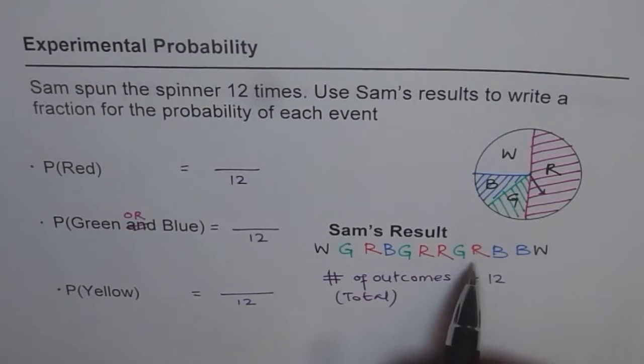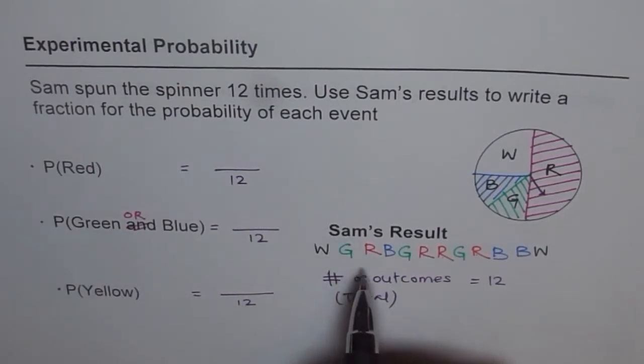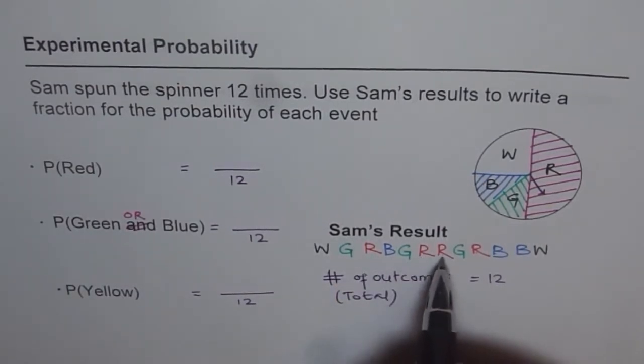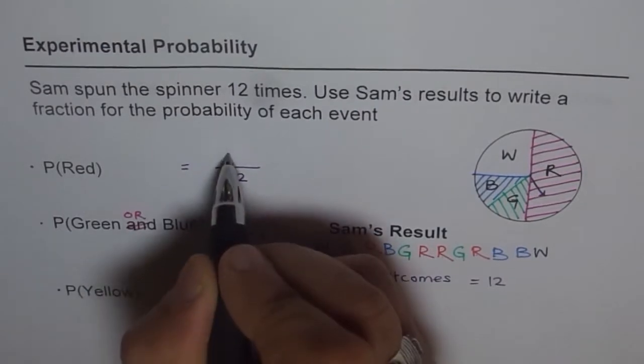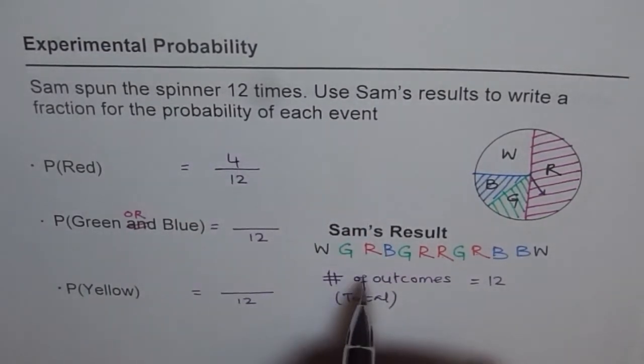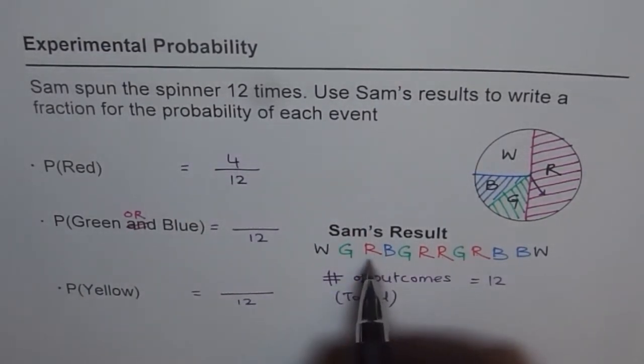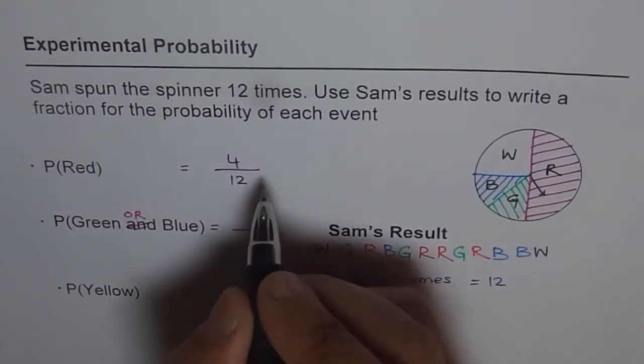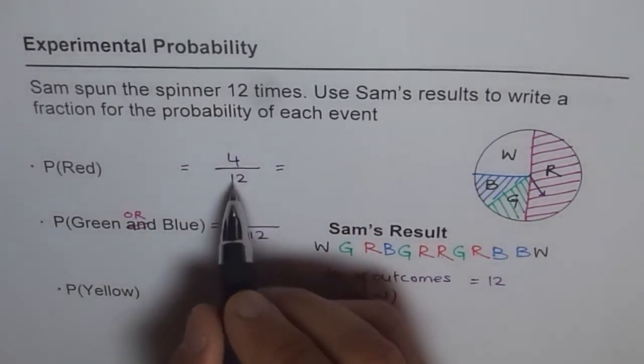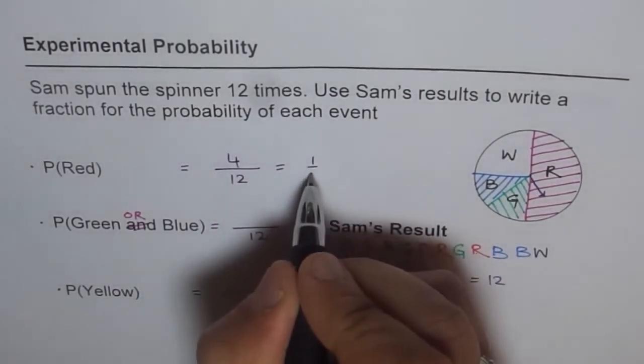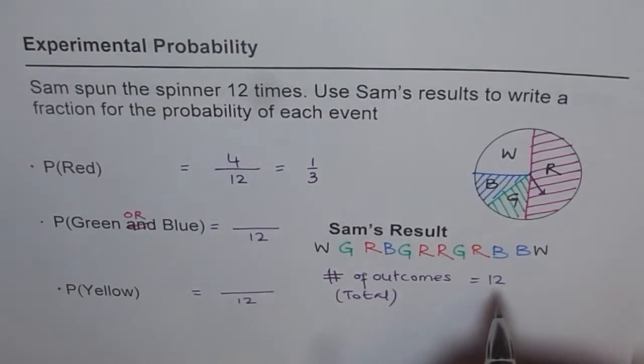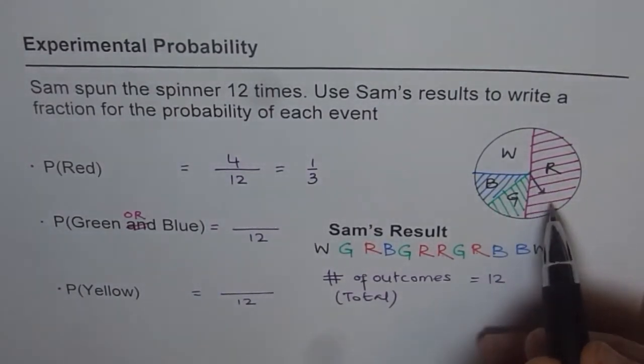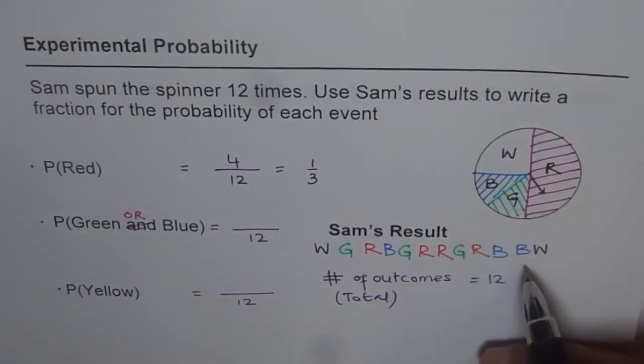And how many of them are favorable to red? Means they are red. They are 1, 2, 3, 4. So 4 are red. Therefore, probability of getting red is 4 out of 12 from Sam's results, which could be simplified. And you can divide both by 4 and write 1 over 3. So it is 1 third. It looks like half from here, but it is not so from the data given to us. That is to be noted.